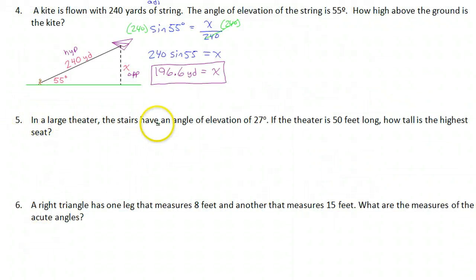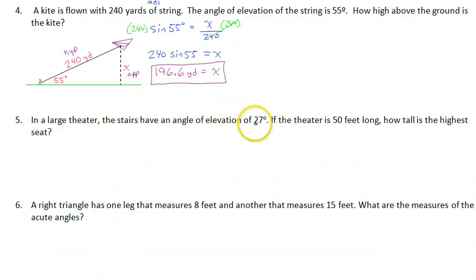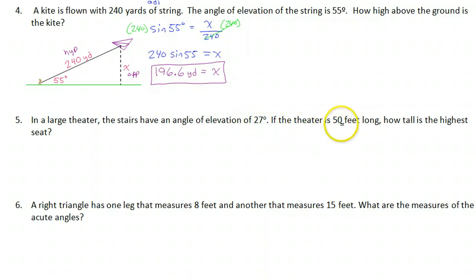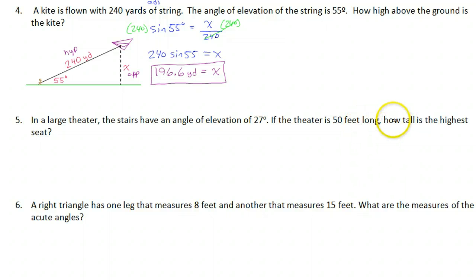In a large theater, the stairs have an angle of elevation of 27 degrees. If the theater is 50 feet long, how tall is the highest seat?